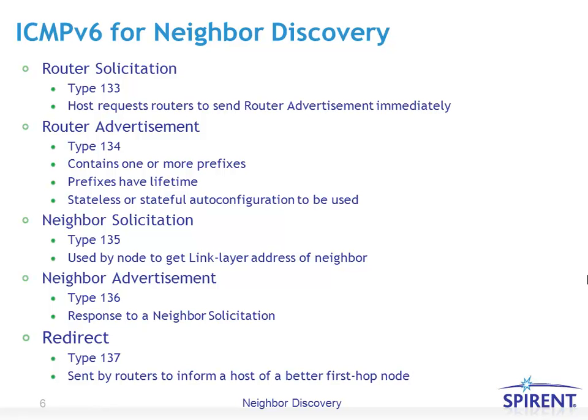The different types of Neighbor Discovery messages: Router Solicitation is type 133, used by hosts to request routers to send an advertisement immediately, as opposed to waiting a minute or two for the next router advertisement to be sent automatically. Router Advertisement type 134 contains one or more prefixes, has a lifetime, and is used for either stateless or stateful auto configuration. Neighbor Solicitation type 135 is used by a node to get the link layer address of a neighbor, whether that's another host on the same subnet or a router when communicating off-subnet.